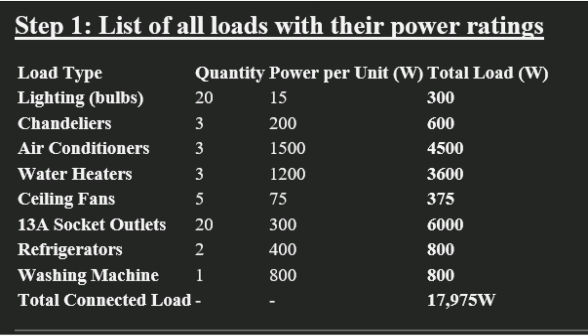Water heaters are three and we assume each water heater is rated 1,200 watts, so three of them give us a total of 3,600 watts. We have five electric fans and we assume each is rated 75 watts, so five of them have a total rating of 375 watts.